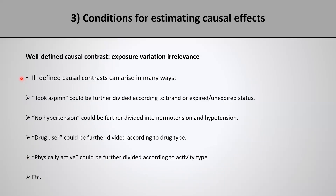Ill-defined causal contrasts can arise in many different ways. For example, exposure to aspirin could be further divided according to the brand of the medication or whether or not it is expired. No hypertension could be further divided into normal blood pressure or pre-hypertension. Drug user could be further divided according to drug type or frequency. Being physically active could be further divided according to activity type, duration, frequency, and so on. For almost any definition of exposure status, it is possible that there are multiple versions of the exposure for a given exposure level. But again, if the groups are defined with enough detail, we might be comfortable with the exposure variation irrelevance assumption.